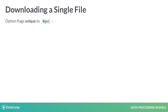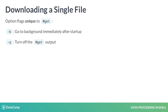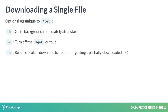Here are some option flags unique to wget. Dash lowercase b allows your download to run in the background. Dash lowercase q turns off the wget output, which saves some disk space. Dash lowercase c is useful to finish up a previously broken download, whether by wget or another program.